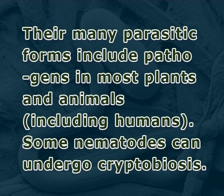There are many parasitic forms that include pathogens in most plants and animals, including humans. Some nematodes can undergo cryptobiosis. One group of carnivorous fungi, the nematophagous fungi, are predators of soil nematodes — they set traps for nematodes in the form of lassos or adhesive structures. Nematodes have even been found at great depths below the surface of the earth in gold mines in South Africa.